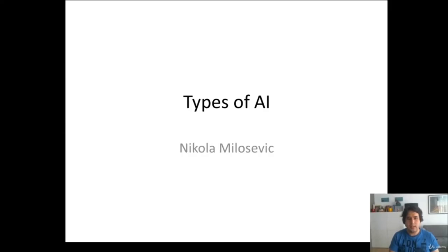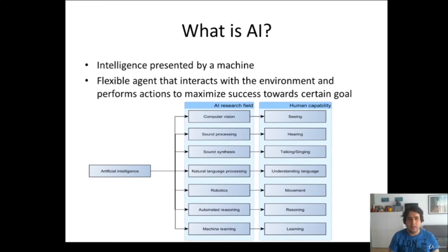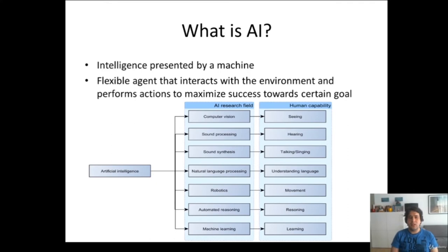Hello, this is Nikola Milosevic and in this lecture we will talk about types of AI — what kinds and types of AI have existed through history or currently exist. We have a graph showing how artificial intelligence resembles all human senses. But let's first define what AI actually is. The most simple definition is that artificial intelligence is intelligence presented by a machine — a flexible agent that interacts with the environment and performs actions to maximize success towards a certain goal.